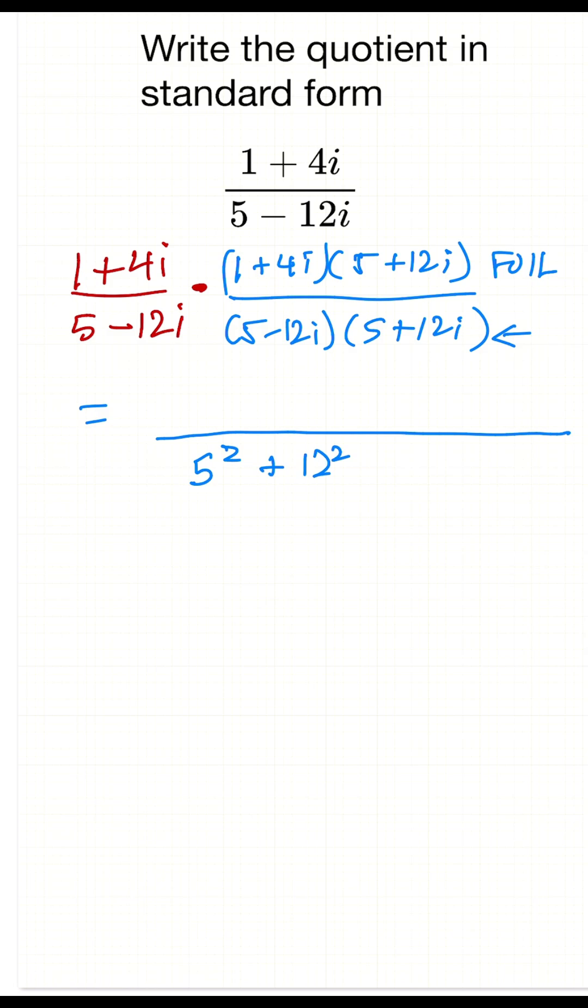So now let's start doing this FOIL method on the numerator. We're going to get 1 times 5, there's the first. Now the outer is going to be those two, so that's plus 12i. And the inner is going to be these two, so that's plus 4 times 5i.